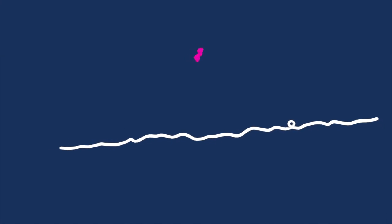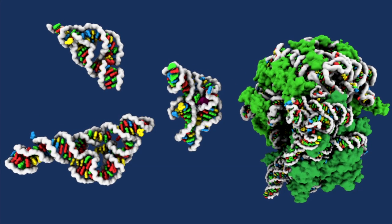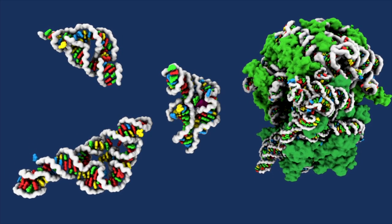RNAs function by folding up into shapes. Some shapes bind to DNA, some cut up RNAs, and still others bond pieces of protein together. In each case, an RNA's shape determines its function in a cell.